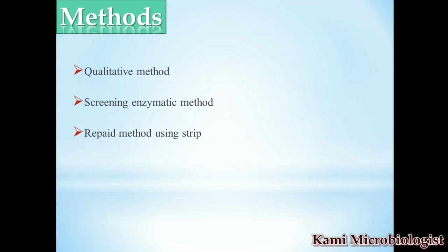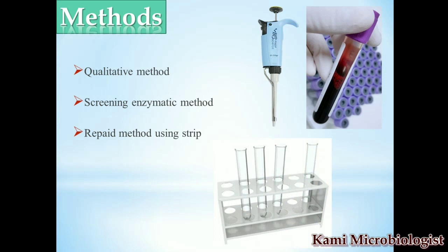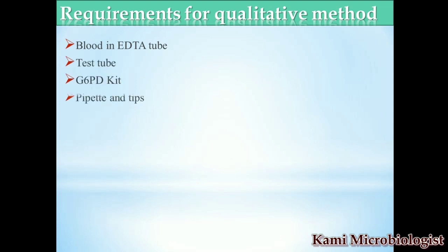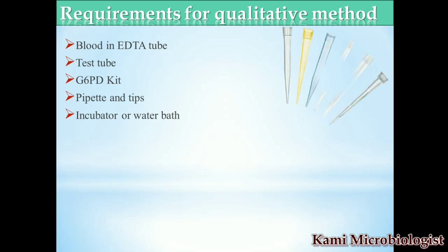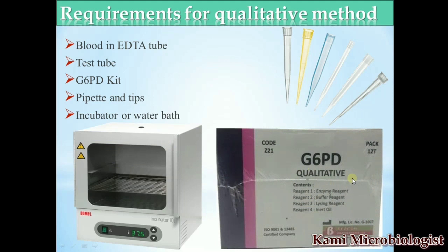For this qualitative method, we need blood in an EDTA tube, a pipette, and a test tube with racks. Other requirements include the glucose-6-phosphate dehydrogenase kit, pipette with tips, and an incubator or water bath. The G6PD kit mostly contains the enzyme reagent, buffer reagent, lysing reagent, and inert oil.